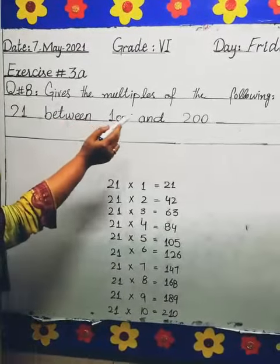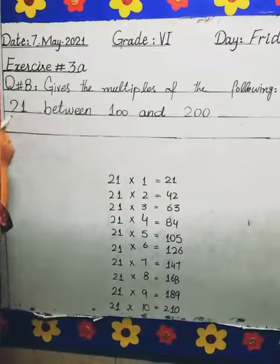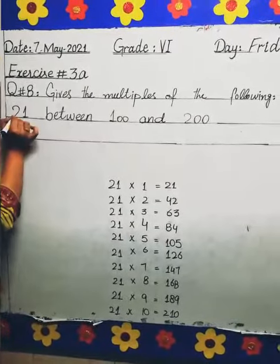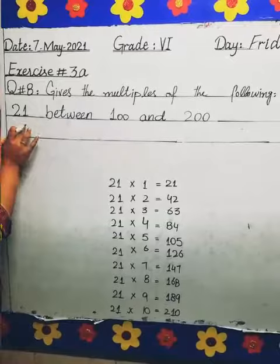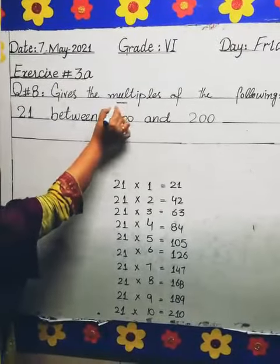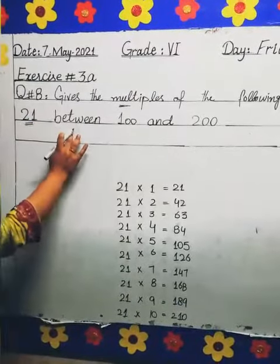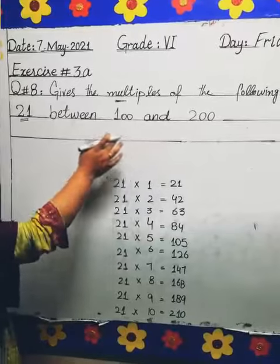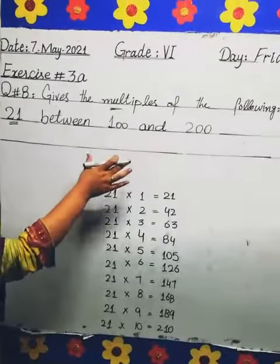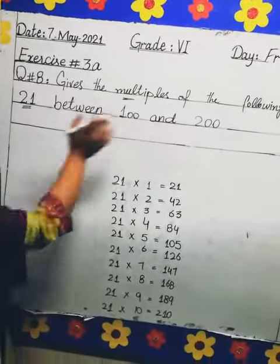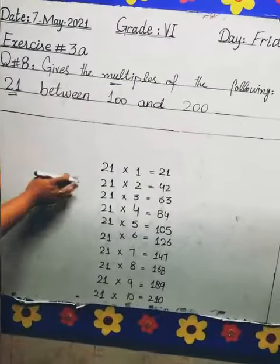We need to find the multiples of 21 between 100 and 200. So what do we do? We write the multiplication table of 21.